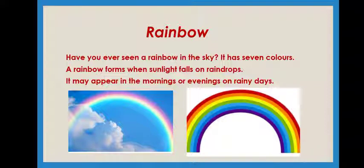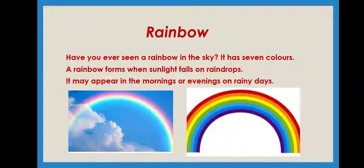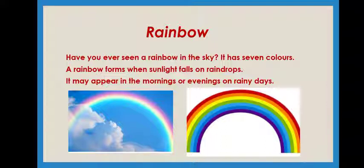Do you know, children, in normal days we cannot see a rainbow. Why? Because raindrops will not be there. In rainy season, we can see the rainbow only when sunlight falls on raindrops. It may appear in the morning or evening on rainy days. It looks so beautiful and you will feel so amazed. There are seven colors in a rainbow.